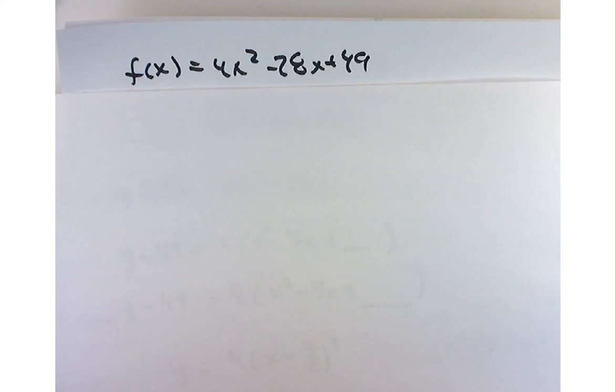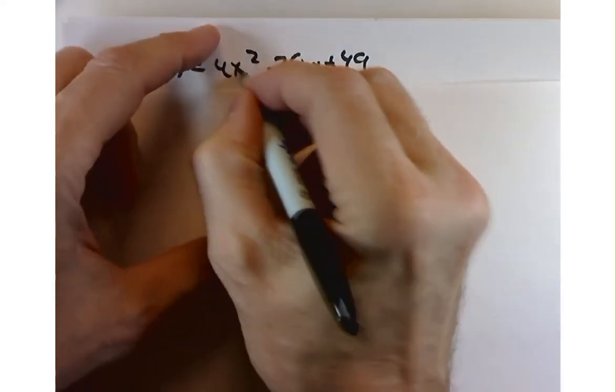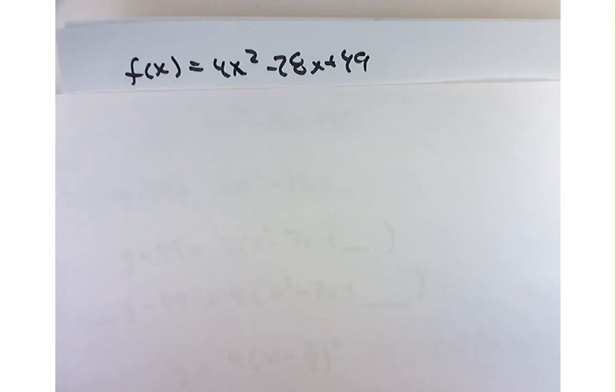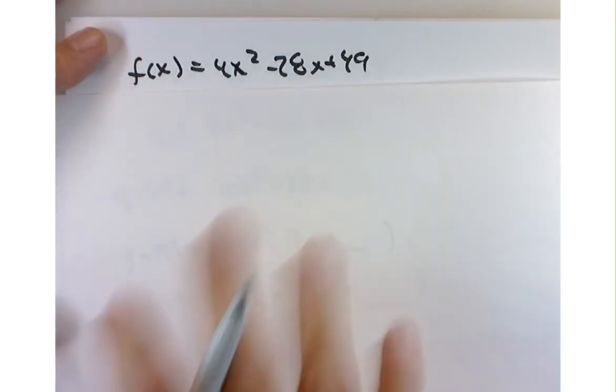Suppose you're given something like this to find the vertex, put it in standard form, all that good stuff. Now, don't try and copy this down because I'm going to go too fast. Watch the video maybe later.